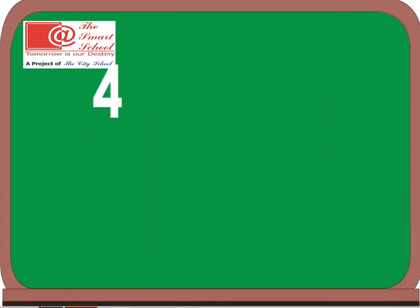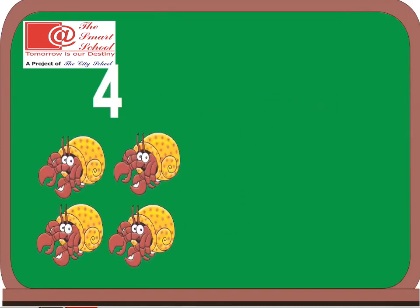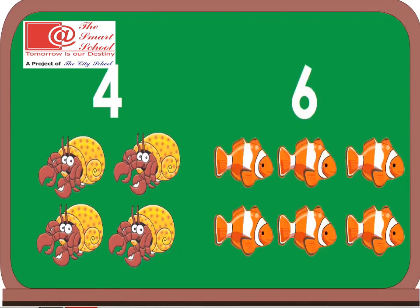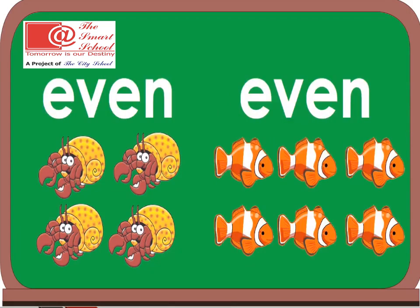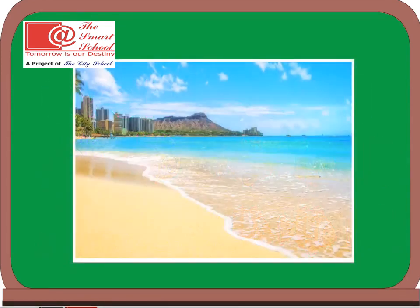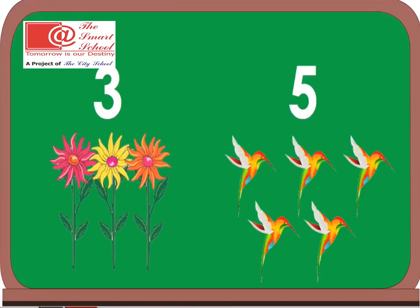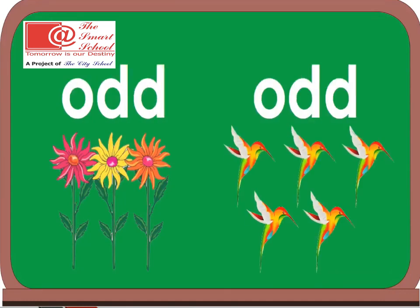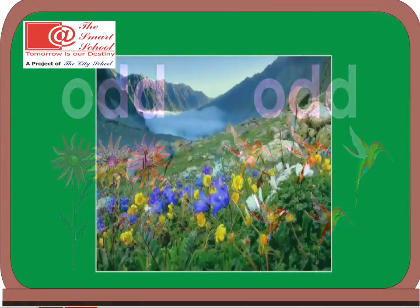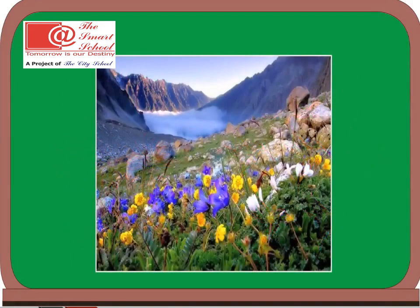I saw four hermit crabs and six tropical fish — even numbers of crabs and fish I saw at the beach. You saw three beautiful flowers and five colorful birds — odd numbers of flowers and birds you saw in the mountains.